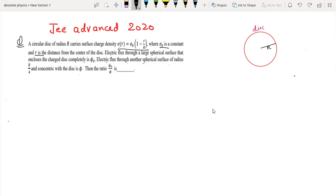Electric flux through a large spherical surface that encloses the disc completely is phi naught.